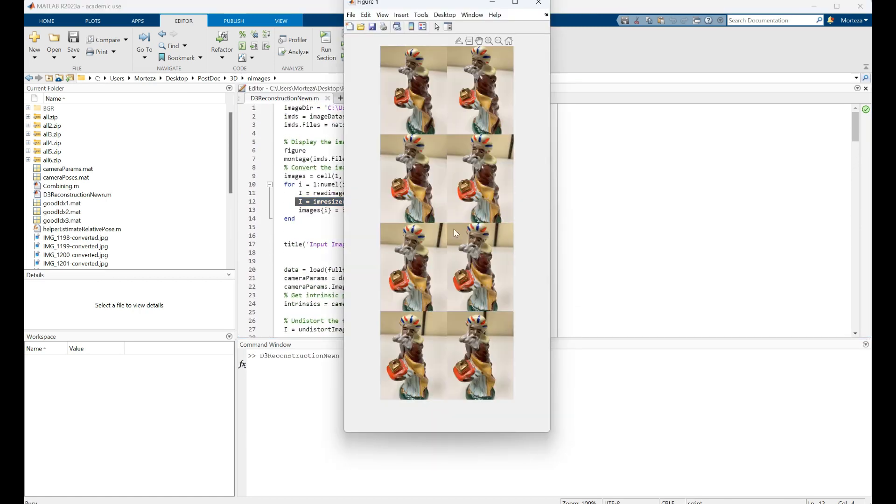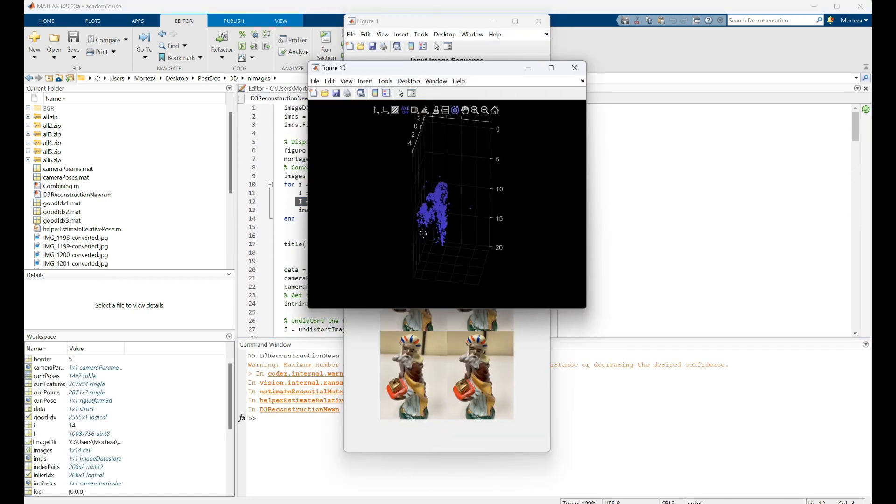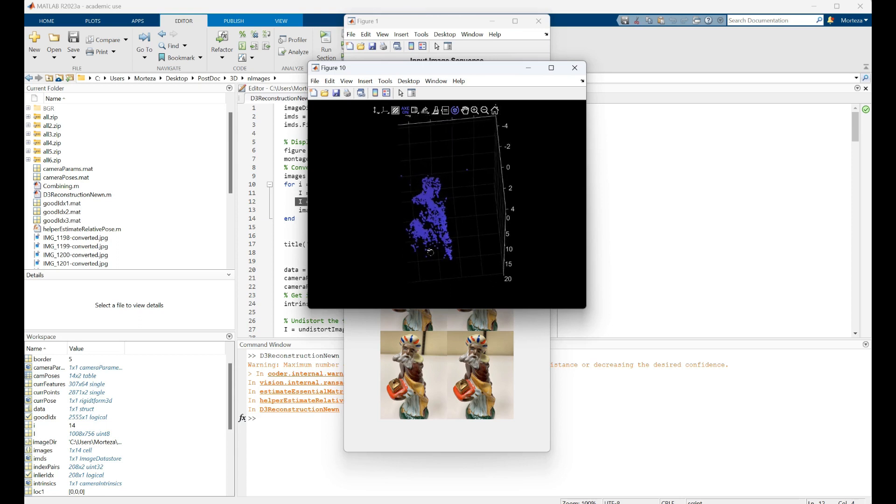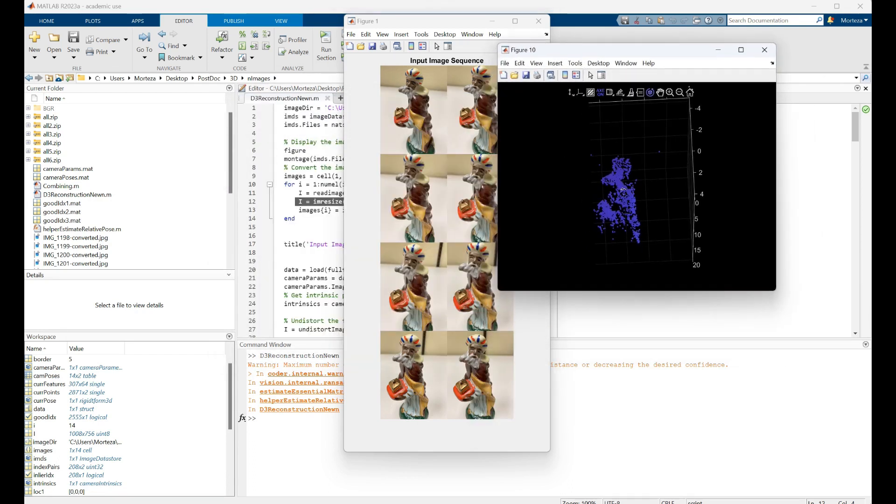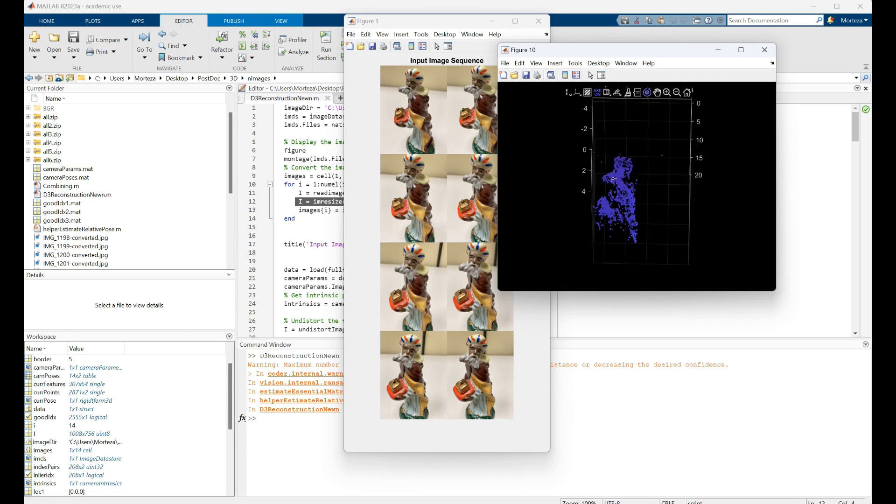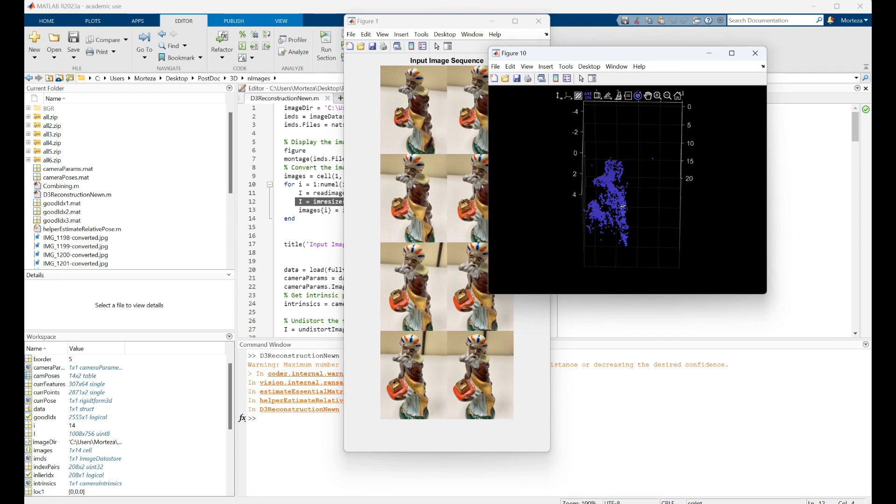These are the images that are being used, and you could see that this is the 3D model and these are the camera poses. This is where the camera was located with respect to the object. But I want to just see this 3D model. We can see that this is the beard, this is the hat, this is the body of the sculpture, and this is the thing that he's carrying. So very well done.